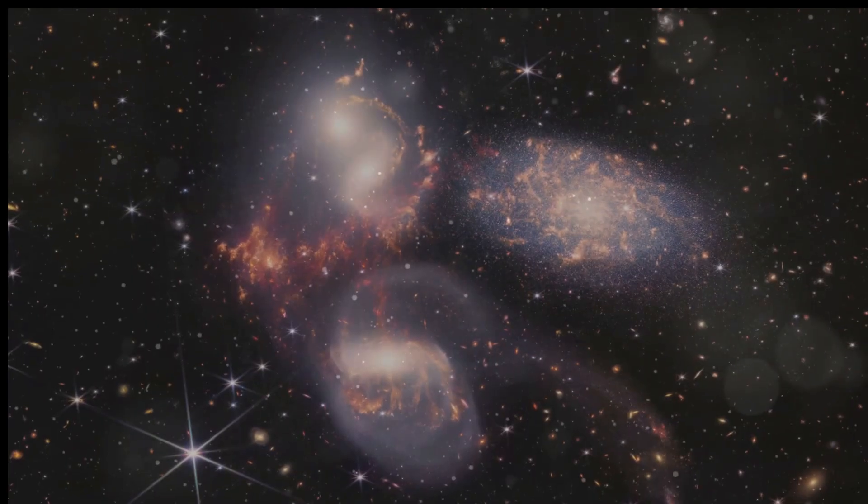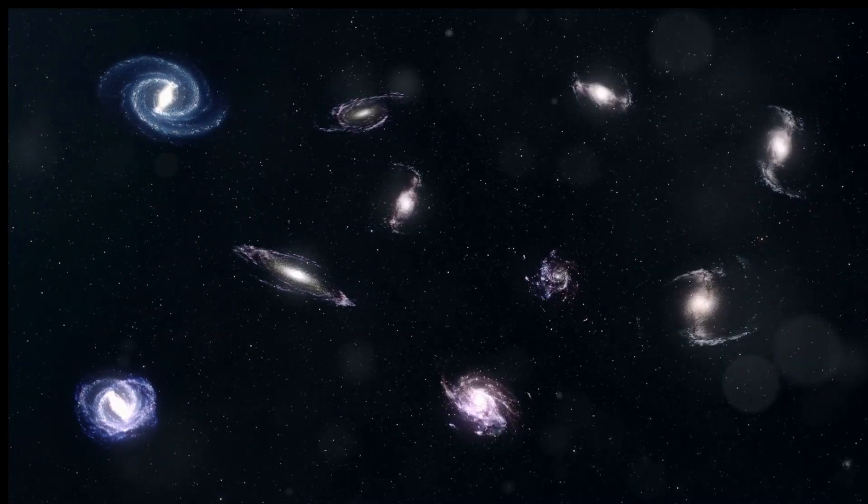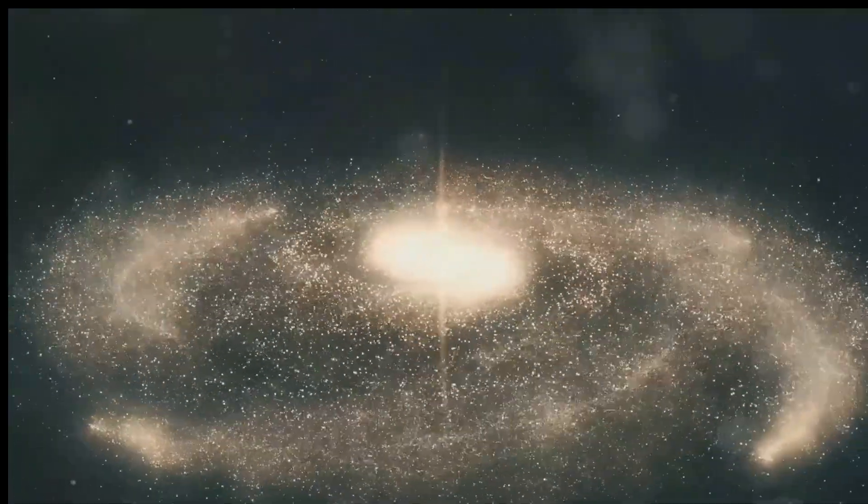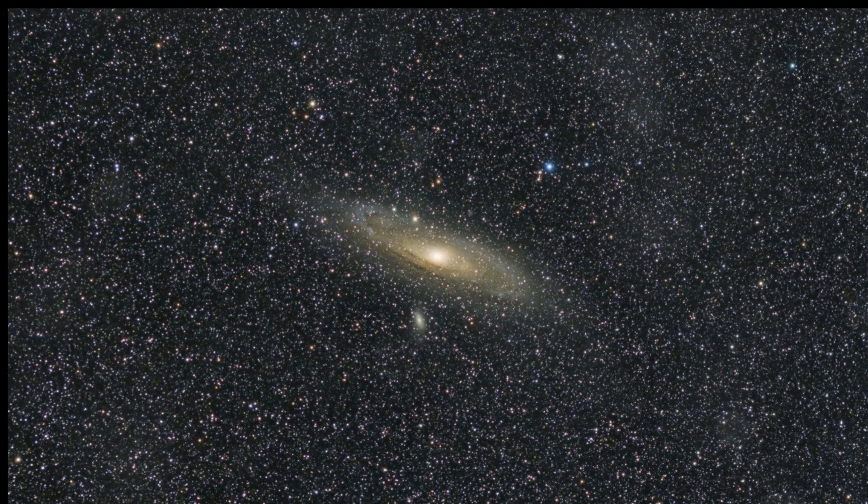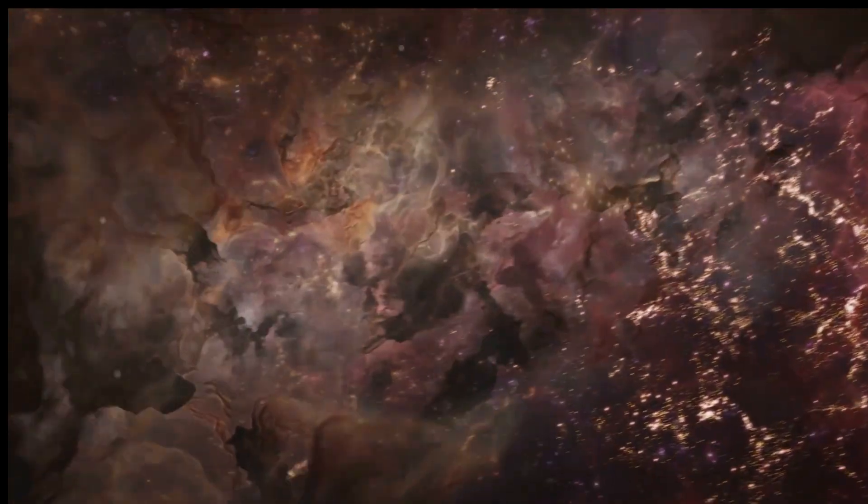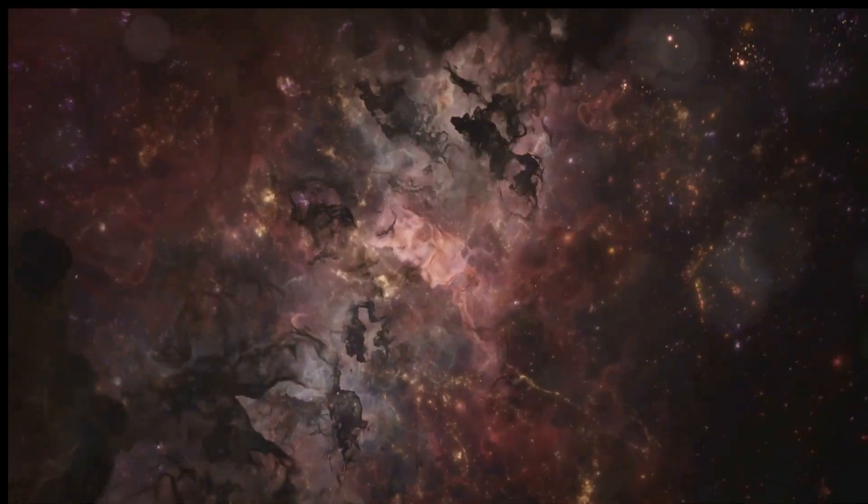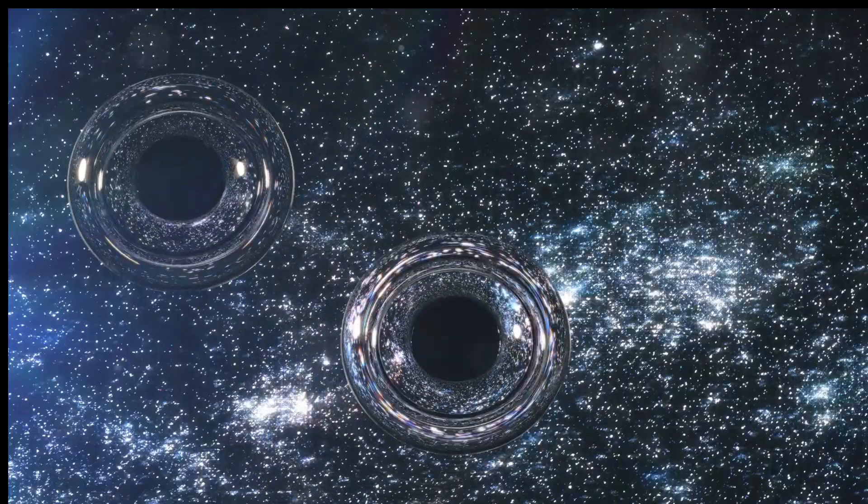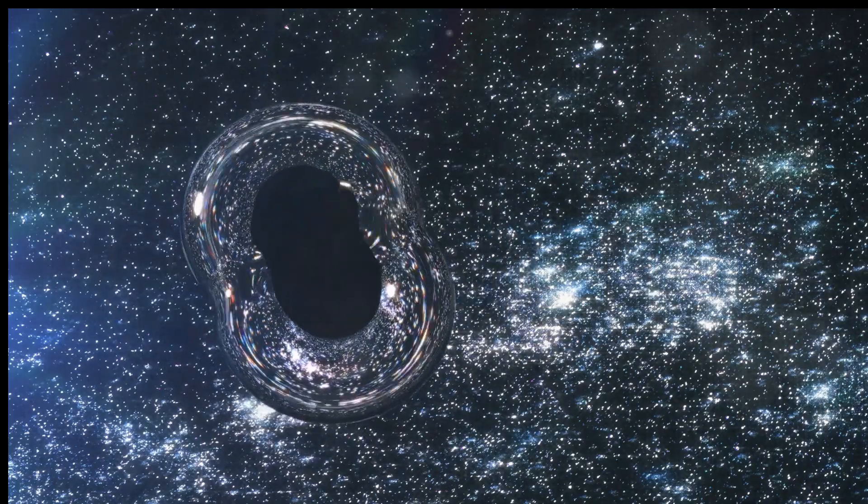In the vastness of space, galaxies are not stationary objects. They are in constant motion, drawn to each other by the relentless pull of gravity. Andromeda and the Milky Way are no exception. Observations reveal a startling truth: Andromeda is hurtling towards us at over 250,000 miles per hour. In about four billion years, these two galactic giants will collide in a spectacular cosmic dance.